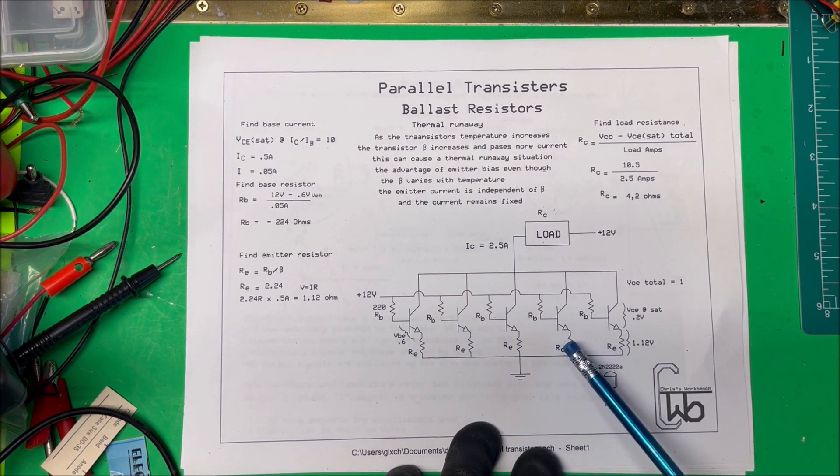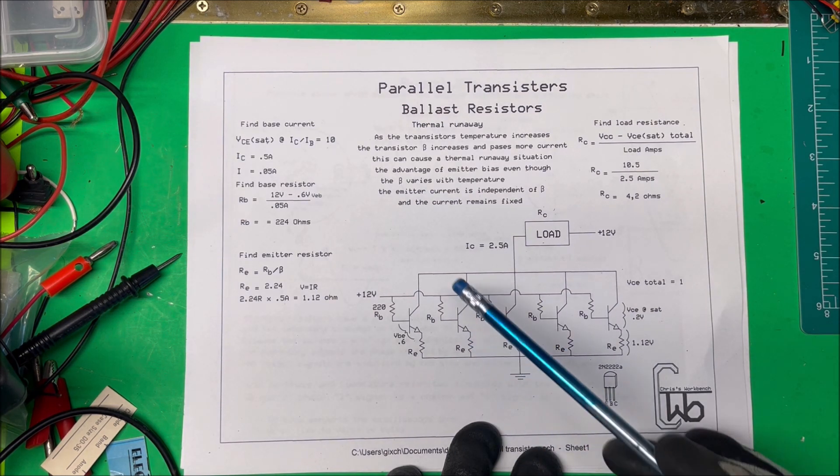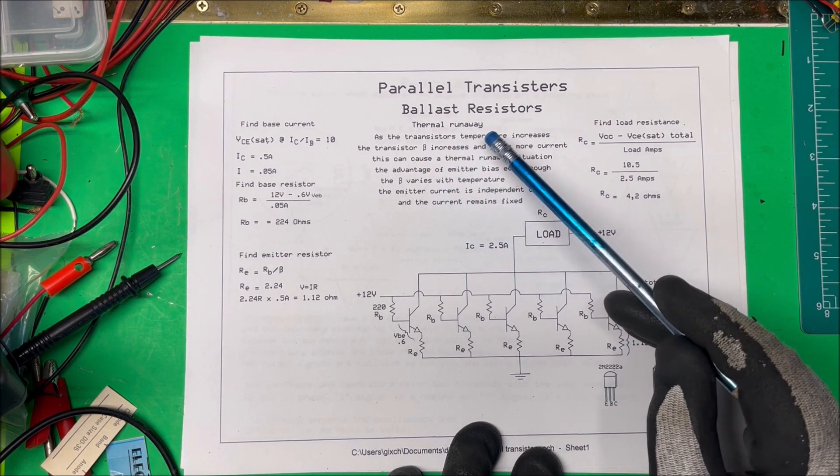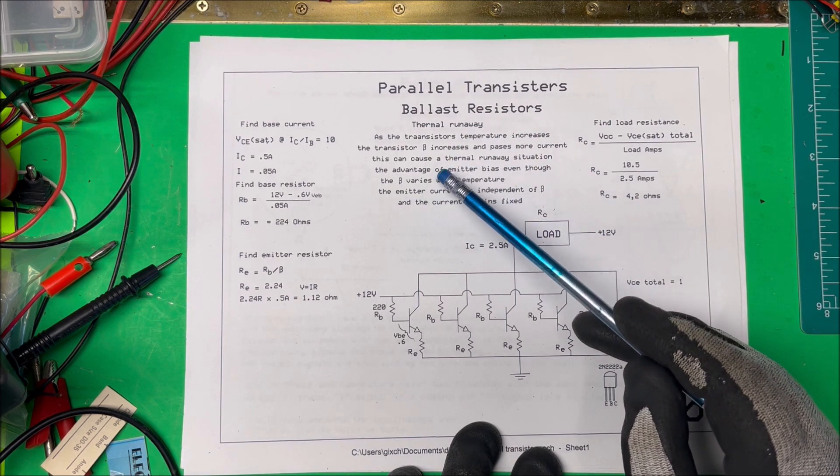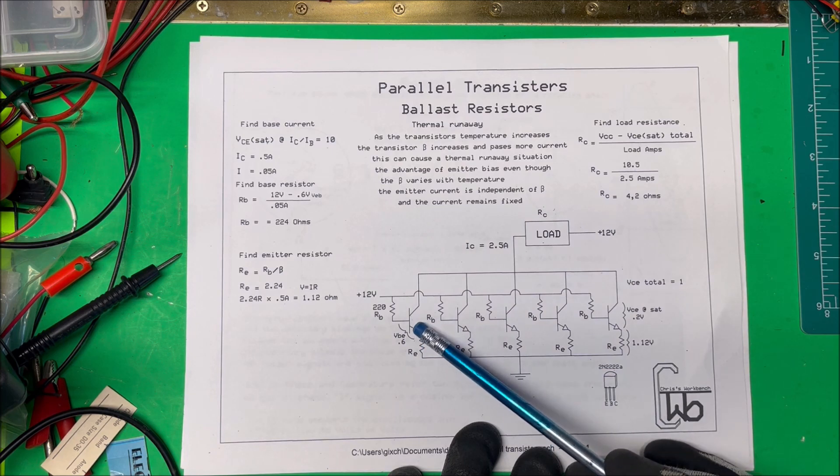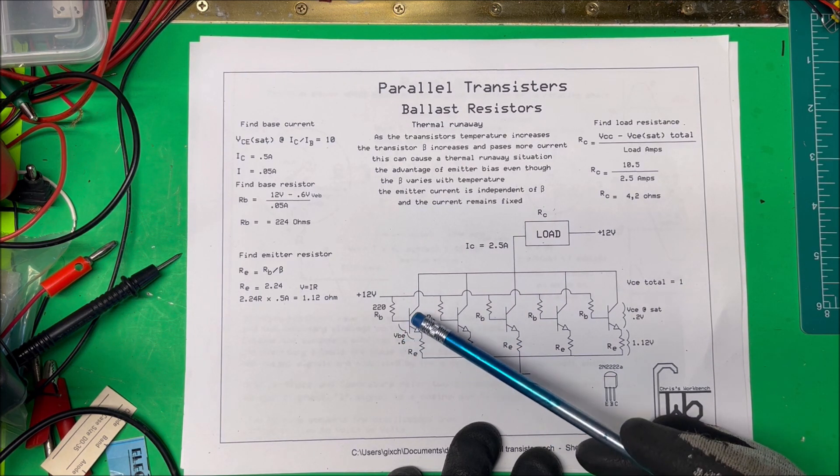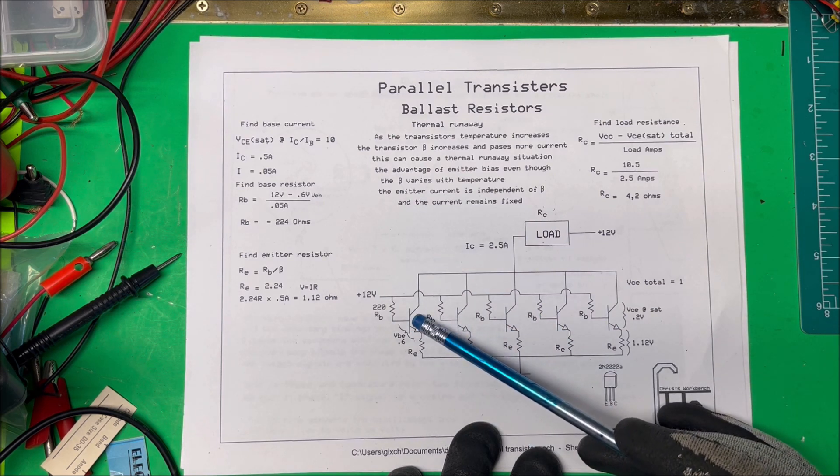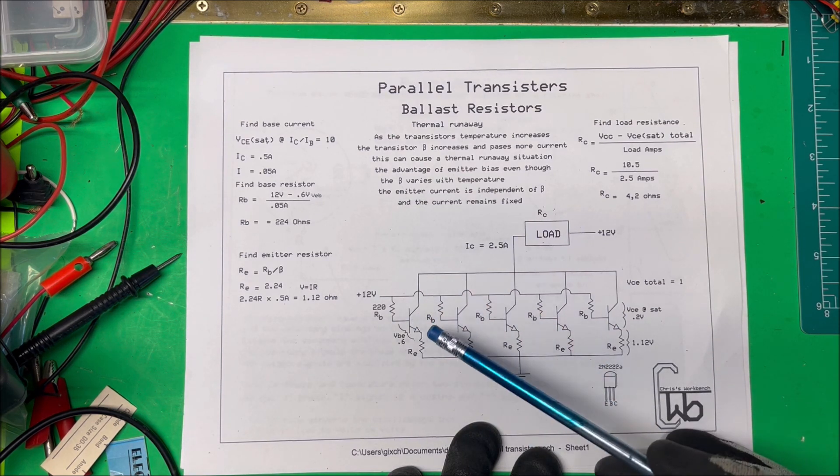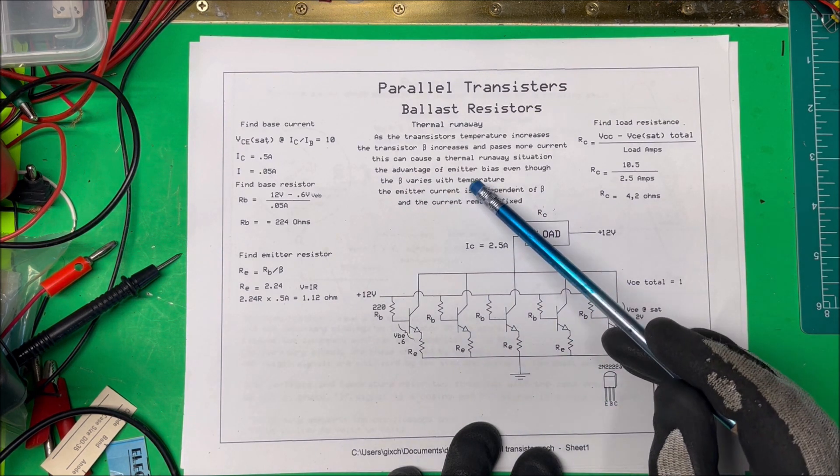Now the problem with parallel transistors is that you could have thermal runaway. As the transistor temperature increases, the transistor's beta increases and it'll pass more current. So if one of them starts to get hotter than the other ones, it'll start passing more current and then it'll just have a runaway situation where that'll draw more current and eventually burn up and then the rest of them will go in suit.